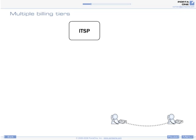First of all, charges are applied to the account — that is the owner of a PIN number or IP phone. This is the end user who is actually using the service.